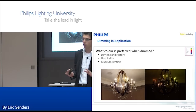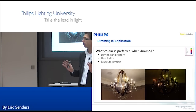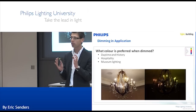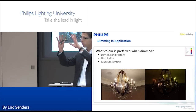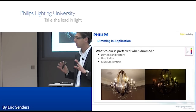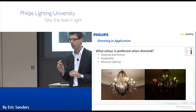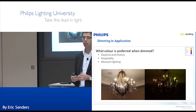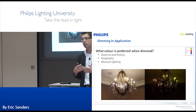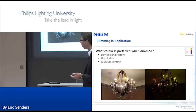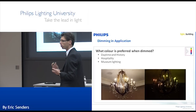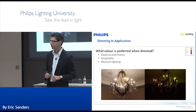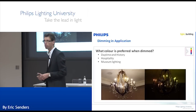Some customers doing museum lighting say the opposite: they love that LEDs stay exactly the same color when dimmed, because they specify their paintings at a certain color temperature. With halogen plus a UV filter, it was so difficult because dimming changed the color. With LEDs, that problem is over. So it really depends on the application — home lighting versus museum lighting have different needs.